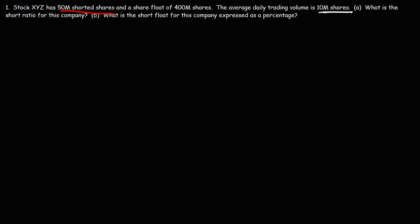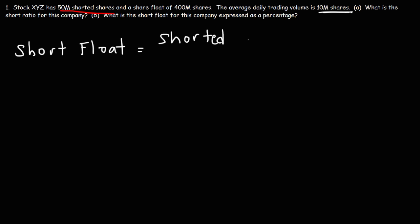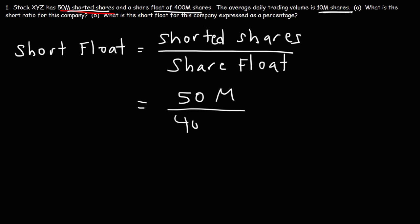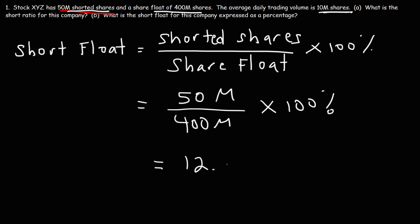What is the short float for this company expressed as a percentage? To calculate the short float, it equals the number of shorted shares divided by the share float. In this problem, we have 50 million shorted shares and a share float of 400 million shares — that's the total number of shares available for trading. Multiplying by 100%, we get 50 divided by 400, which is 0.125 times 100%, giving us a short float of 12.5%.